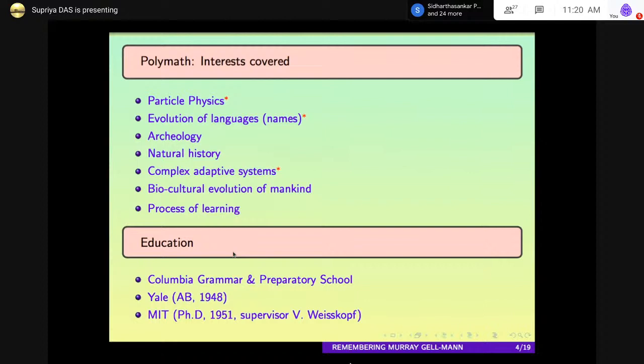He was really a polymath. He had many interests - particle physics was his main interest, and he was very much interested in evolution of languages, specifically names. Then he was interested in archaeology, natural history, complex adaptive systems, biocultural evolution of mankind, and also the process of learning. All this is too much, I can't cover all of that. Even one of them, if I want to cover in detail, it would be too long. So I'll only talk about three aspects of his interests: particle physics, evolution of languages and names, and complex adaptive systems.